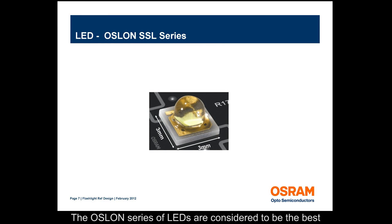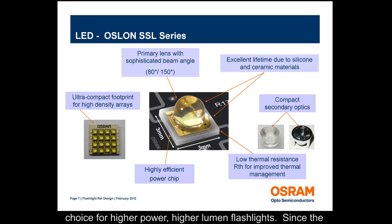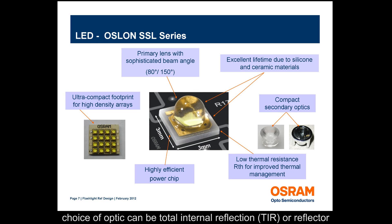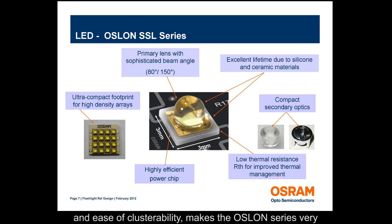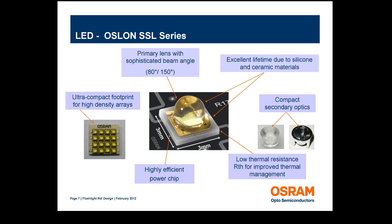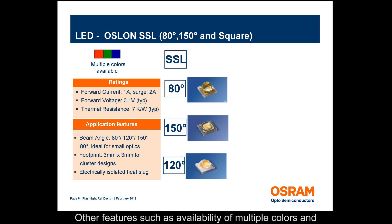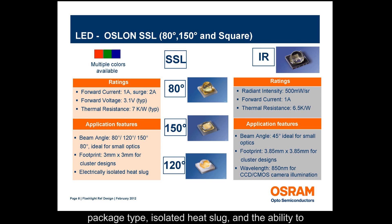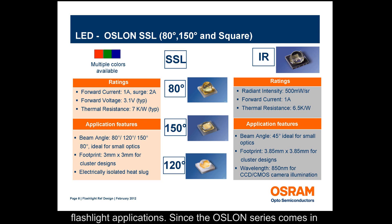The Oslon series of LEDs are considered to be the best choice for higher power, higher lumen flashlights. Since the Oslon series is available in two different beam angles, the choice of optic can be total internal reflection or reflector based. Also, the size of the LED, which is only 3mm by 3mm, and ease of clusterability makes the Oslon series very attractive for flashlight applications. The Oslon series of LEDs also comes in different power levels, from 1 watt to 4 watts, within the same package type.